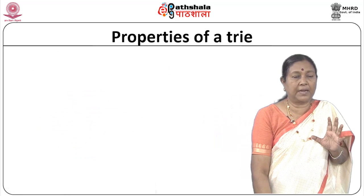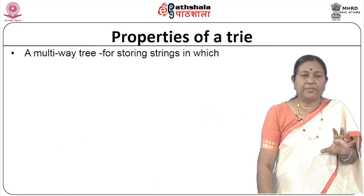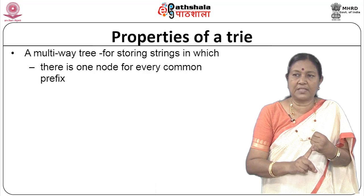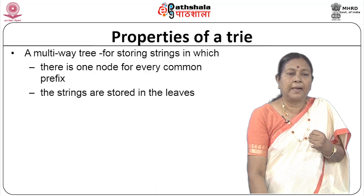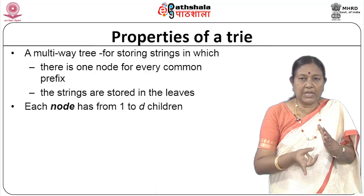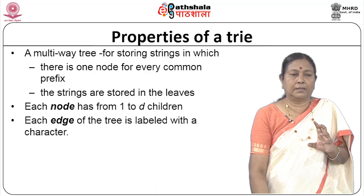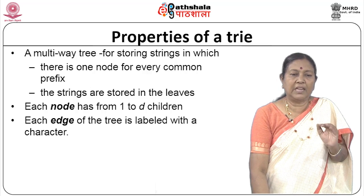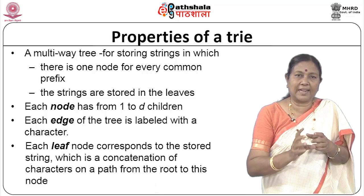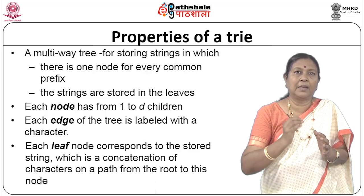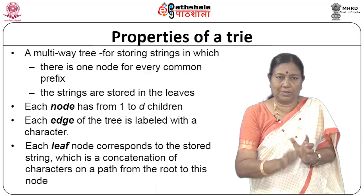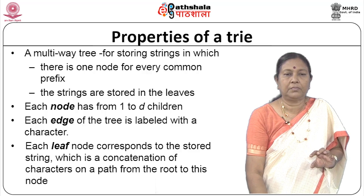Let us look at properties of a trie. It is a multi-way tree for storing strings in which there is one node for every common prefix. The strings are stored in the leaves. Each node has 1 to d children, where d is the alphabet size. Each edge is labeled with one character, and each leaf node corresponds to the stored string, which is a concatenation of all characters along the path from root to that leaf.